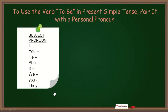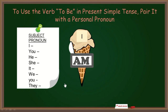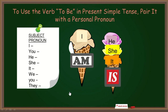Las formas del verbo to be se van a dividir de la siguiente forma, con su significado ser o estar dependiendo el contexto. El am se queda con el pronombre sujeto I: I am — yo estoy, yo soy. El is se queda con tres pronombres sujetos: he is — él es o él está; she is — ella es o ella está; it is — esto es o esto está.